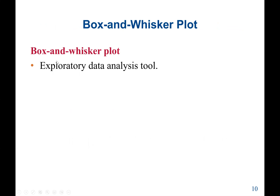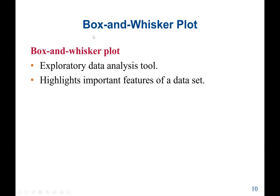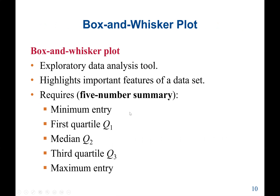Next, we learn how to plot the box and whisker plot. This tool is for exploratory data analysis and is a visual representation of Q1, Q2, and Q3, as well as the minimum and maximum values. To plot the box and whisker plot, we need a five-number summary: the minimum value, the maximum value, and the calculated Q1, Q2, and Q3.